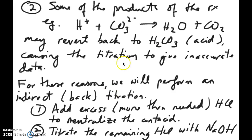For these reasons we're going to do a titration that's called indirect or back titration instead. So the way we're going to do that is instead of titrating the antacid exactly to the endpoint, what we're going to do is actually we're going to add way more acid than we need to neutralize the antacid.